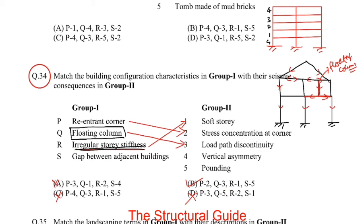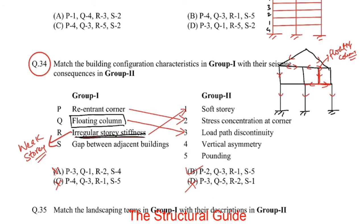There is one more related term: weak story. A weak story is one in which the story lateral stiffness is less than 80% of that in the story above — different from soft story which is less than 70%. The gap between additional buildings: the correct answer for this is bonding.